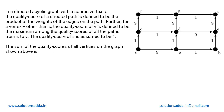We have been given a directed acyclic graph, or DAG. In this graph, a source vertex is s and the destination vertex is t. The quality score for a directed path is defined as the product of the weights of the edges on that path. For example, if we have a path from a to b to c with weights 2 and 3, the quality score is 2 times 3 equals 6.